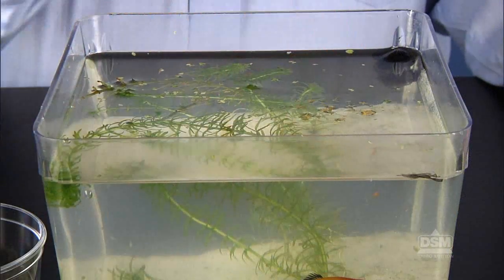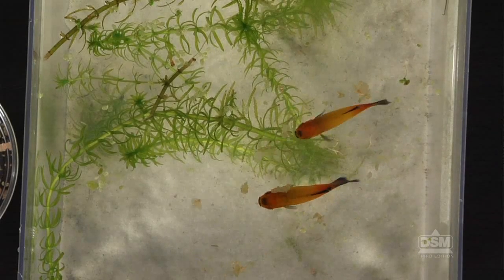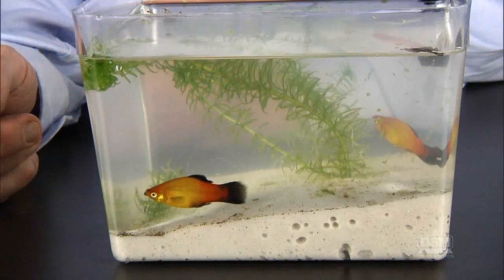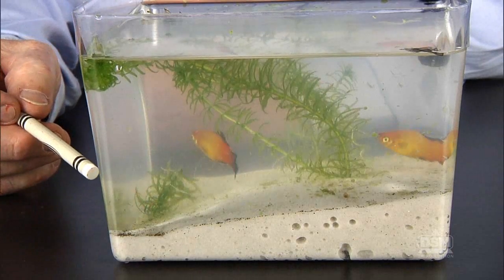Next, have students add a pinch of fish food to their aquariums and observe what happens. The fish should swim to the surface of the water and gobble up the food. Then, instruct students to tap once on the side of the aquarium. The fish will most likely dart about the container or hide among the plants.